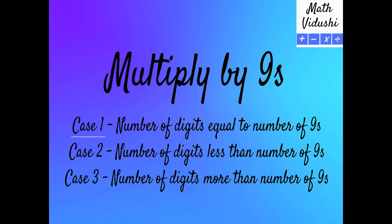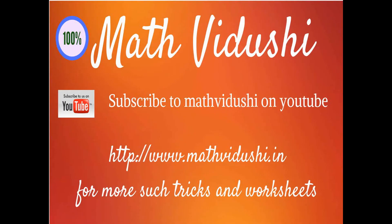We looked at a case where the number of digits is equal to the number of nines. The cases 2 and 3, where the number of digits is less than or more than the number of nines, we will be looking at in other videos. Please do not miss them to learn more such easy tricks.